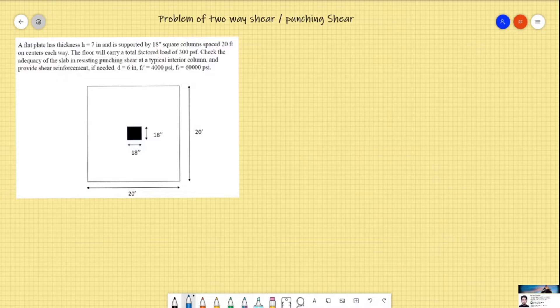The effective depth of the slab is given as 6 inches, fc prime is given as 4000 psi, and the yield strength of steel, fy, is given as 60,000 psi. To solve this problem, we have different techniques.